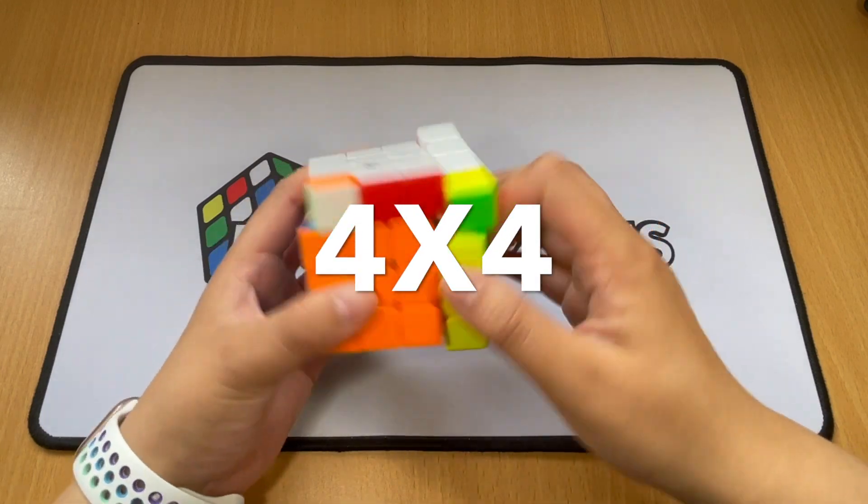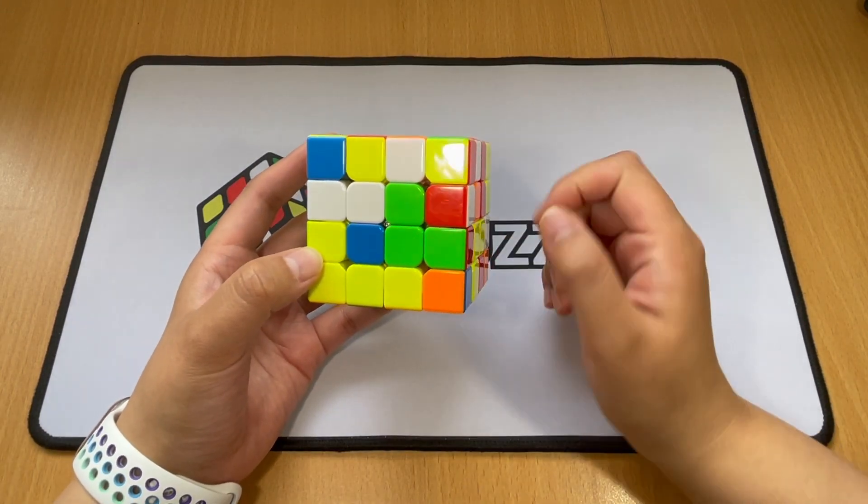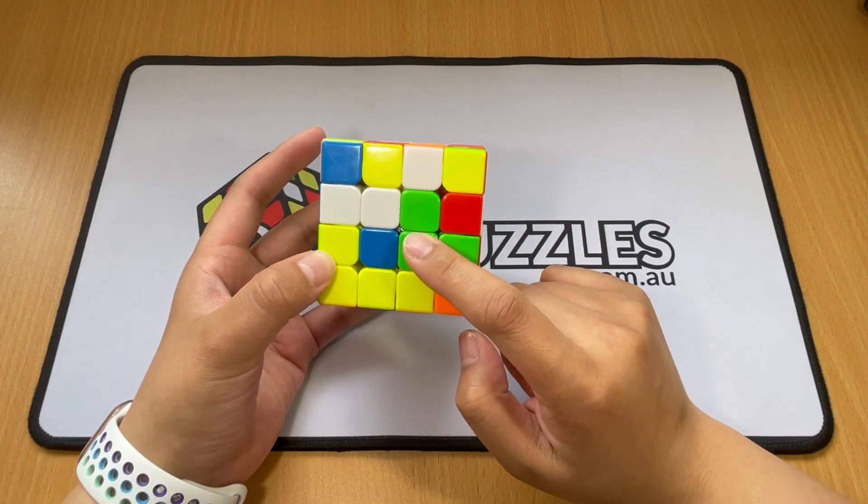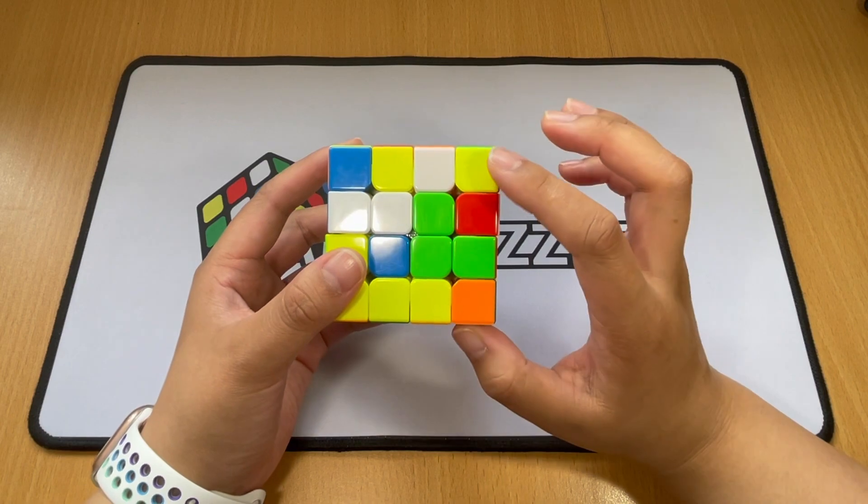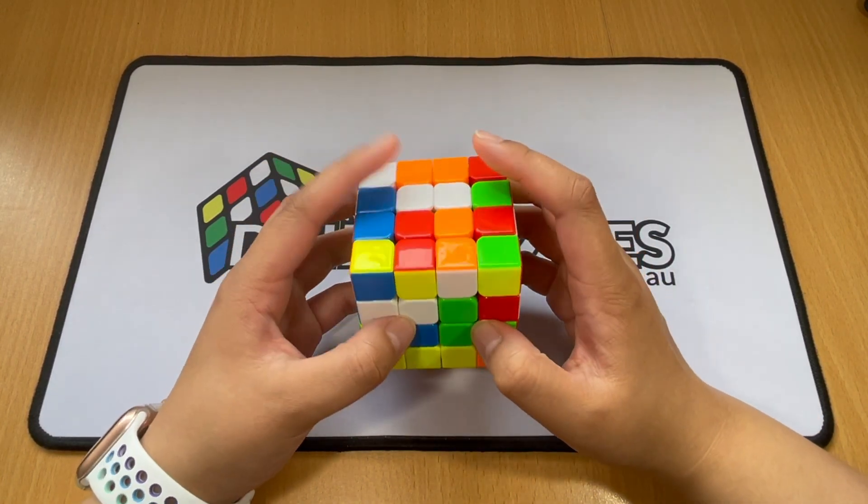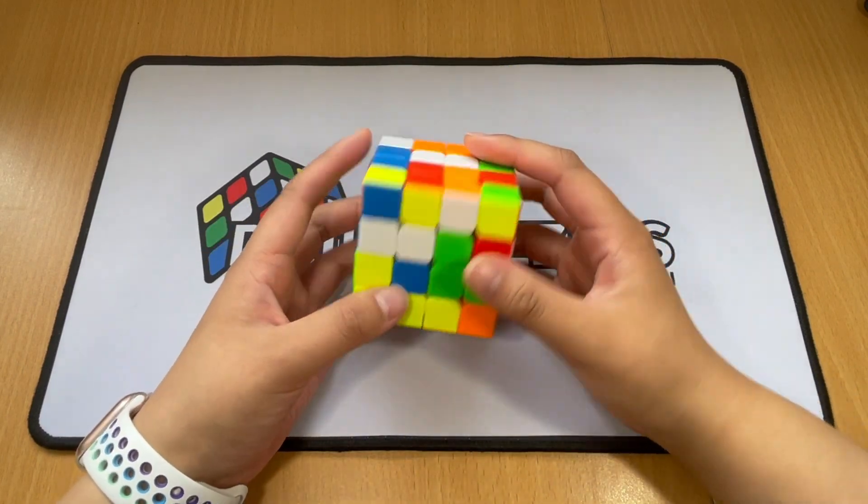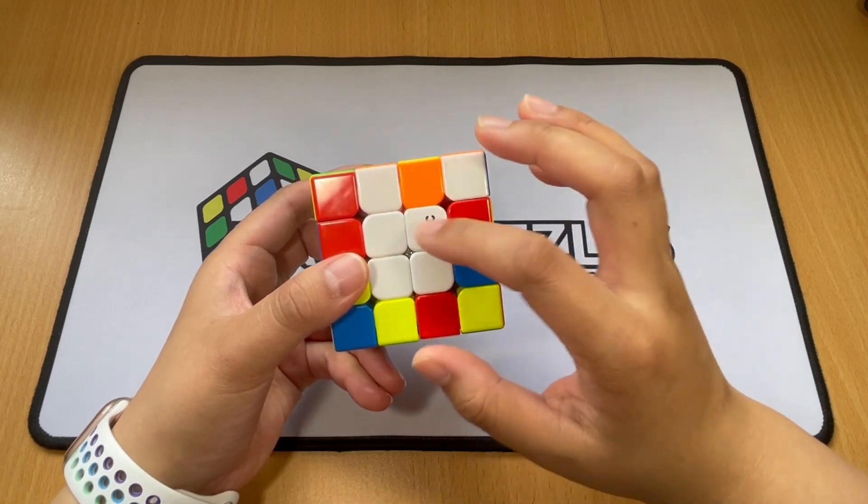4x4, you can essentially solve like a 3x3. Let me scramble it up. One thing different compared to a 3x3 is there's no center piece here. You can see the screw. There's no center cap covering it because this is an even-numbered cube. The first thing you need to do is make centers. I always start with white or yellow. Now you can see I've got a yellow top and a white bottom.